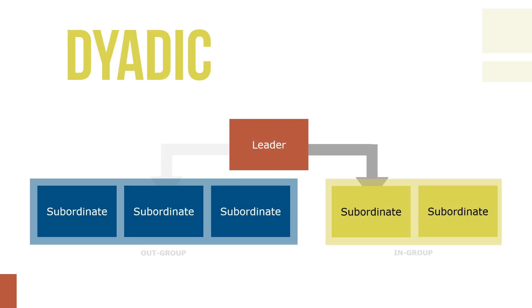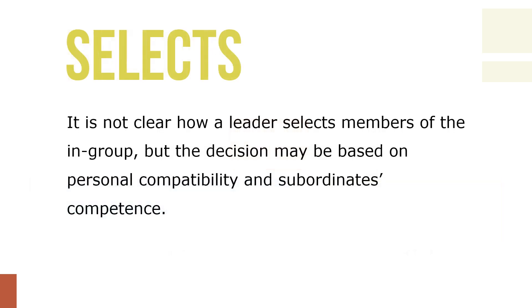Note that the figure shows the leader has a dyadic, one-to-one relationship with each of the five subordinates. Early in his or her interaction with given subordinates, the supervisor initiates either an in-group or out-group relationship. It's not clear how the leader selects members of the in-group, but the decision may be based on personal compatibility and the subordinate's competence.